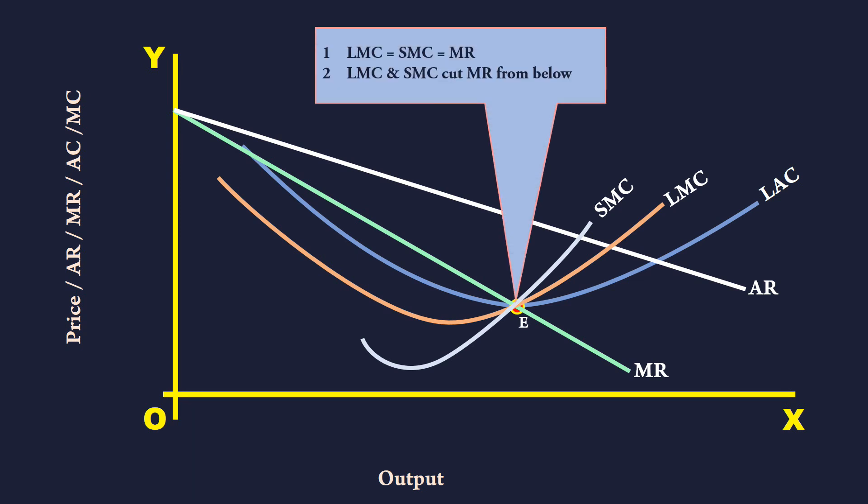Since LMC, SMC and MR are equal to one another at point E, the first long run equilibrium condition of a monopoly firm is satisfied. Again at point E, short run average cost curve SAC is tangent to the long run average cost curve LAC. So at E, the second equilibrium condition is also satisfied.